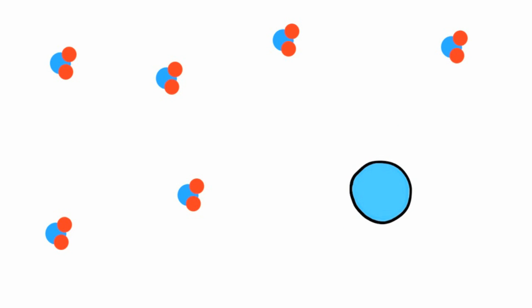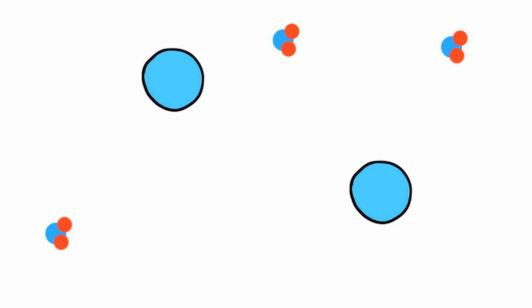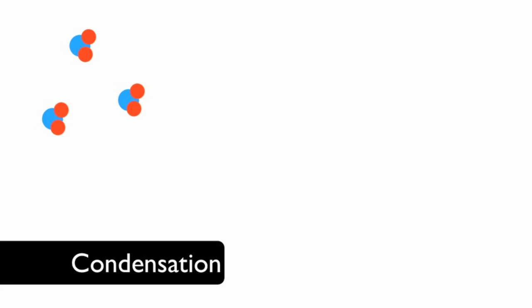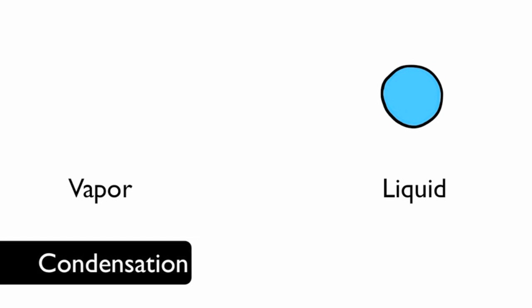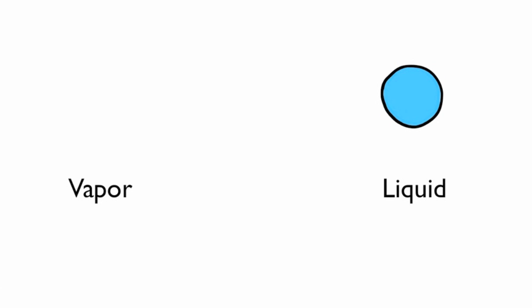Water vapor that is high in the atmosphere begins to cool. The vapor goes through condensation and starts to come together. Condensation is the process when water turns from a vapor into a liquid. The water continues to condense and forms clouds.